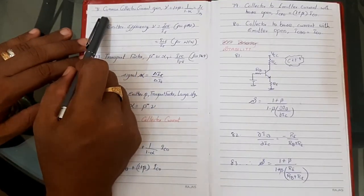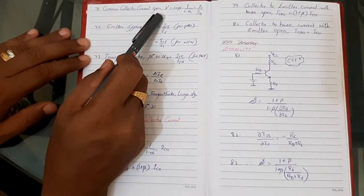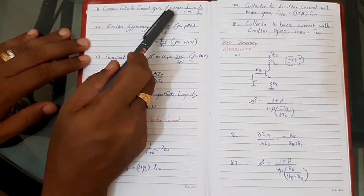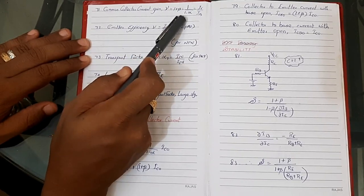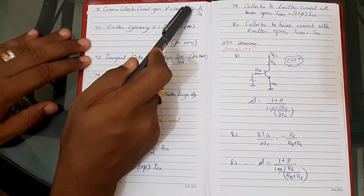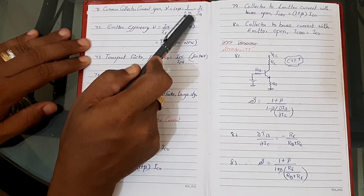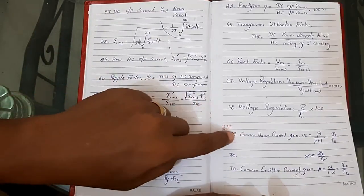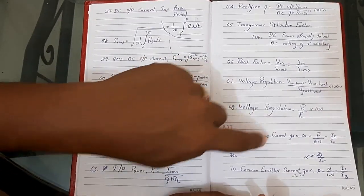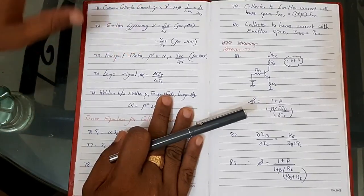Number 71: Common collector current gain, γ = 1 + β = 1 / (1 − α) = IE / IB (emitter current divided by base current). These three formulas cover common base, common emitter, and common collector configurations and their relationships.